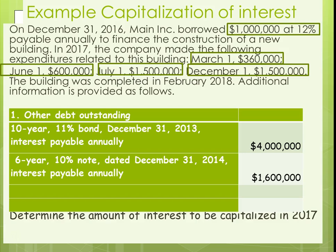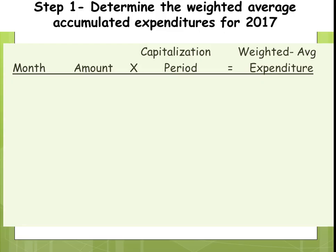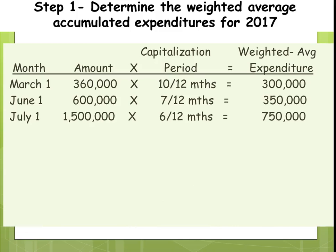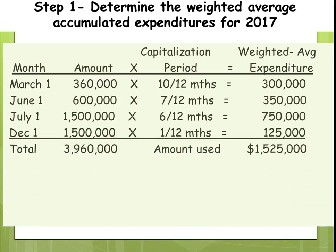We need to determine the amount of interest to be capitalized. The first step is to figure out our average expenditures using a weighted average based on months outstanding. For the $360,000, it was outstanding for 10 of the 12 months, giving a weighted average of $300,000. We do that for each expenditure, arriving at a total weighted average expenditure of $1,525,000.